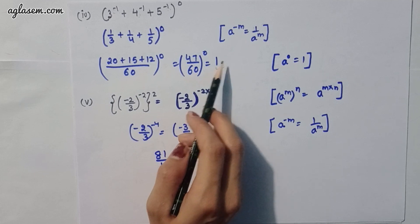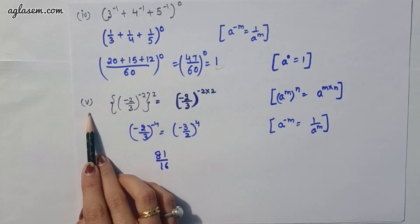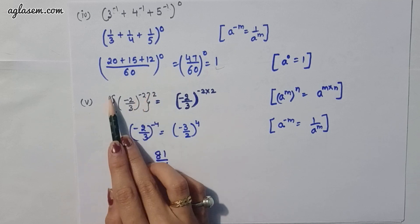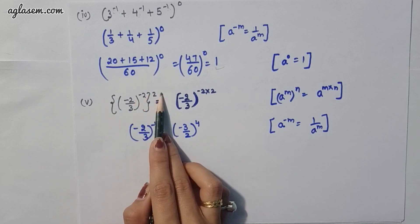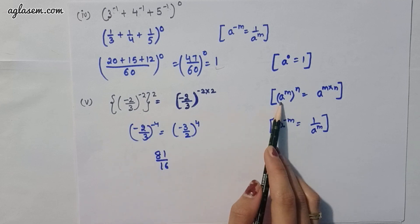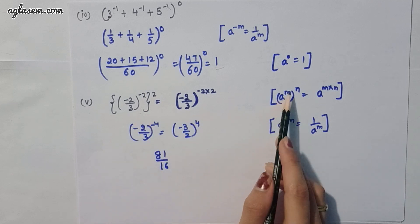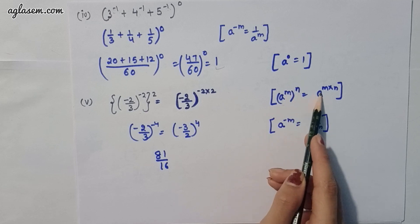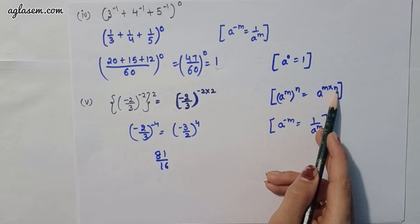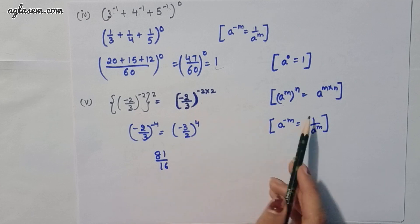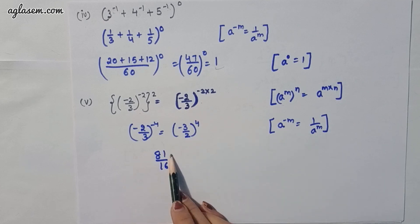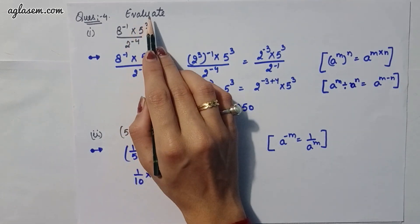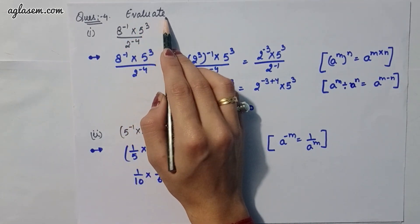Moving to the fifth part: ((-2/3)^(-2)) whole power 2. Applying the formula (a^m)^n = a^(m×n), we can solve this easily and the answer is 81/16.